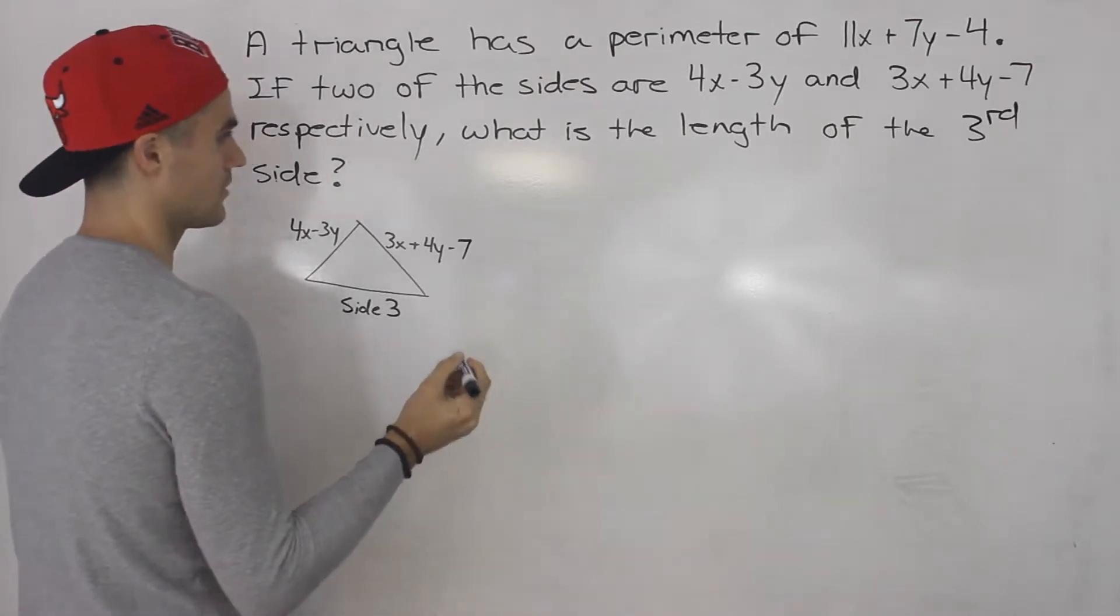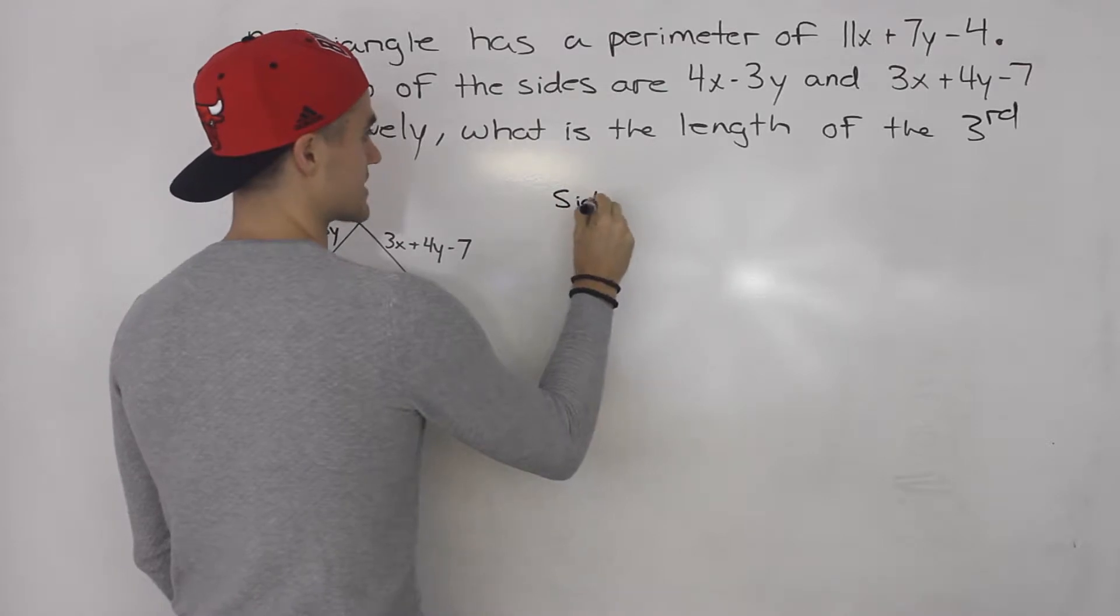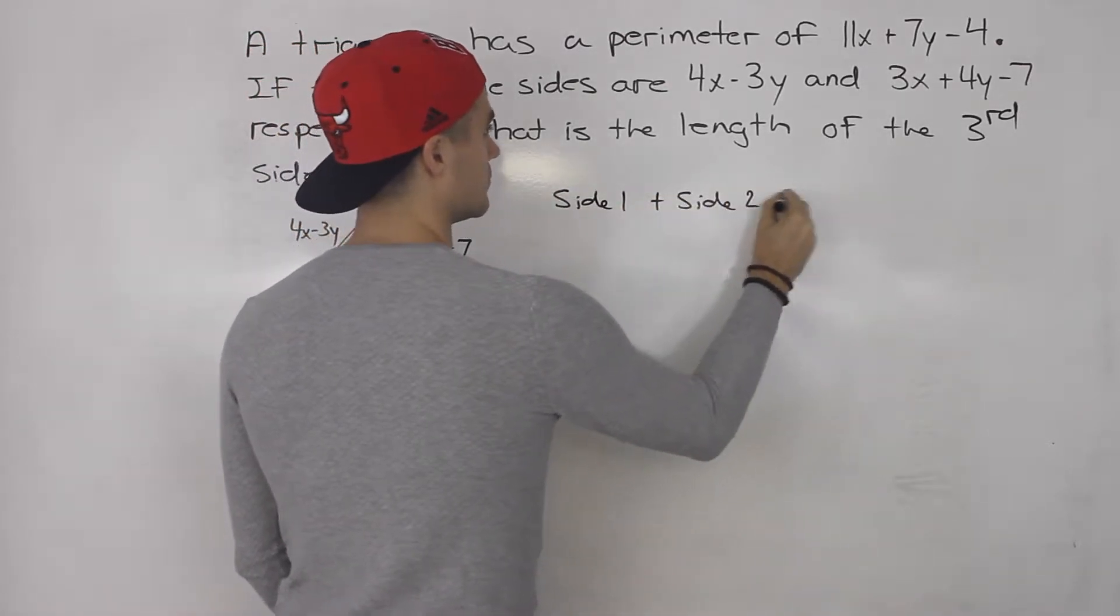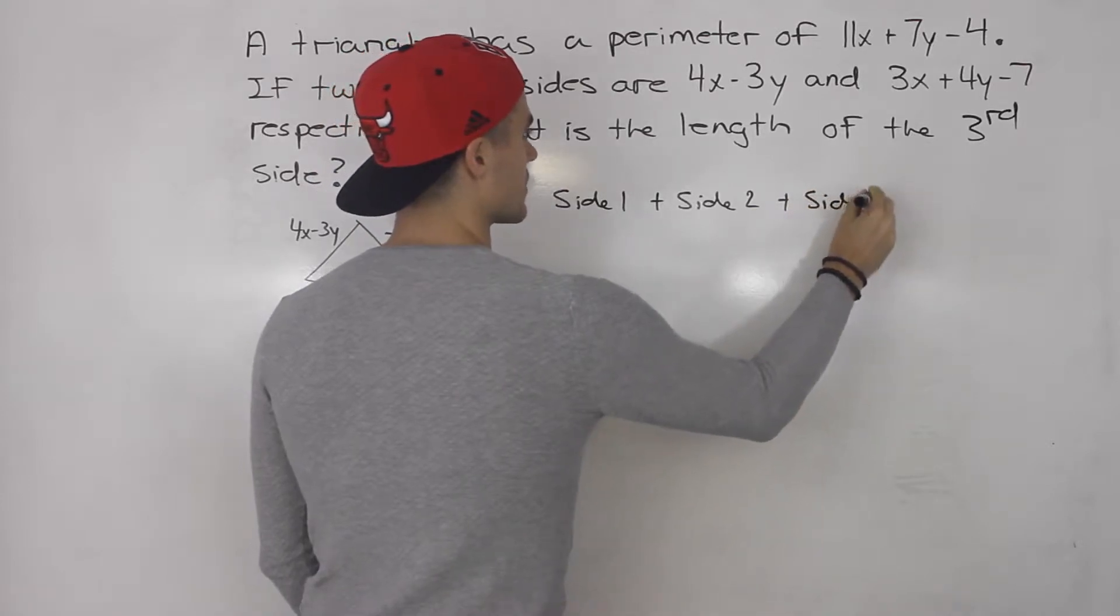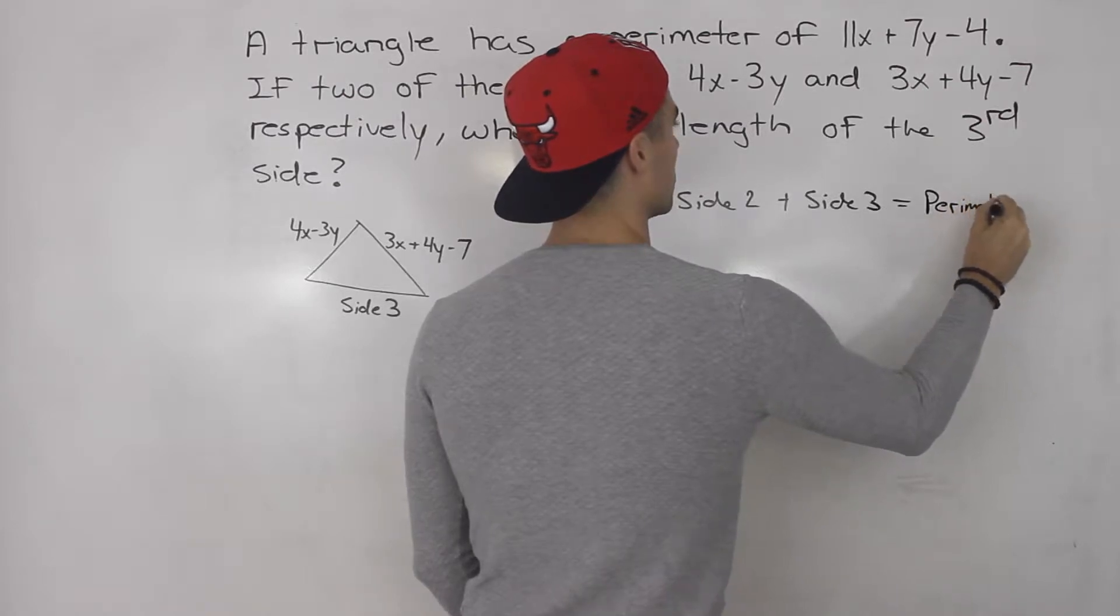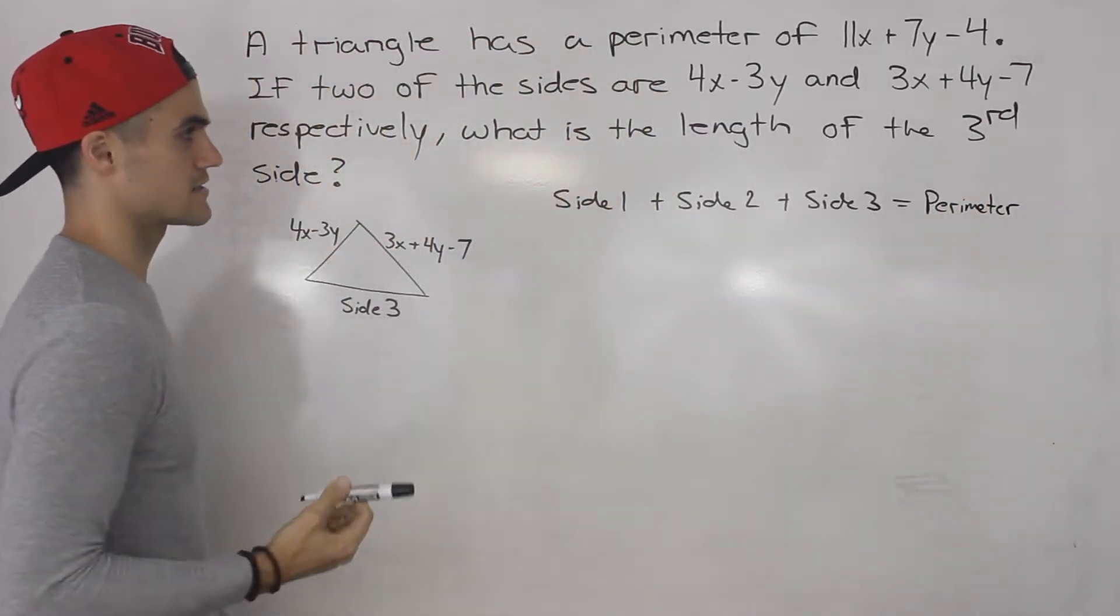Now in general, the perimeter of a triangle is what? It's going to be side 1 plus side 2 plus side 3. That's going to give us the perimeter. Perimeter of a triangle is all three sides added up.